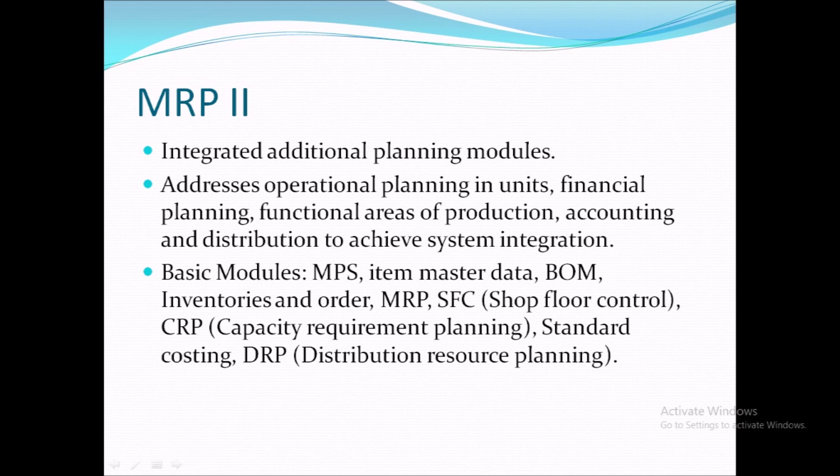In MRP1 we talked about when to place your order to your customer and when to place your order to your supplier. In MRP2 you also talk about finance, accounting, and distribution. The basic modules in MRP2 are: first, MPS — Master Production Schedule — where you plan which machine will process which customer order and when. Second is Item Master, where you record items required, their quantity, and quality check.